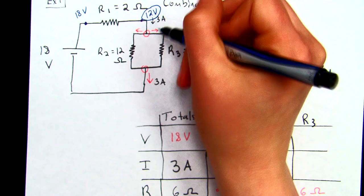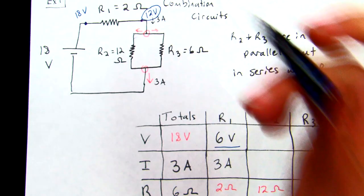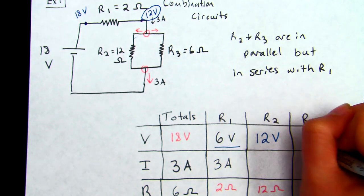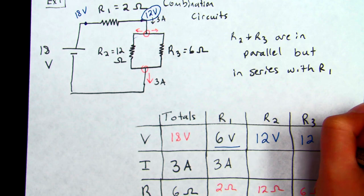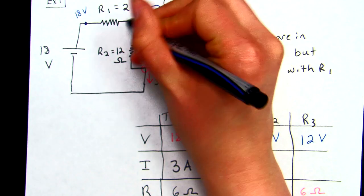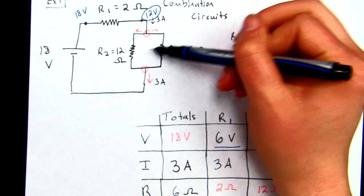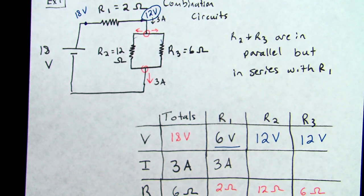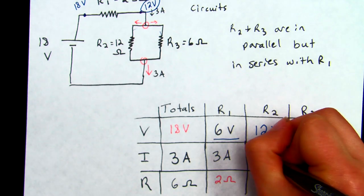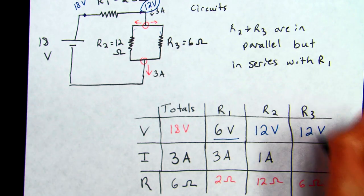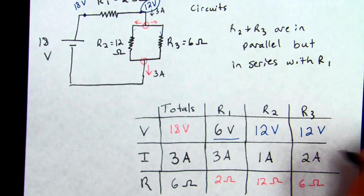Because this is parallel, those 12 volts will be the same for each, which means regardless of which one I go through, R2 or R3, I'm going to have another voltage drop of 12 volts. And then look, we can do Ohm's law again. We see that this is 1 amp here, 12 divided by 12, and 12 over 6 is 2 amps.